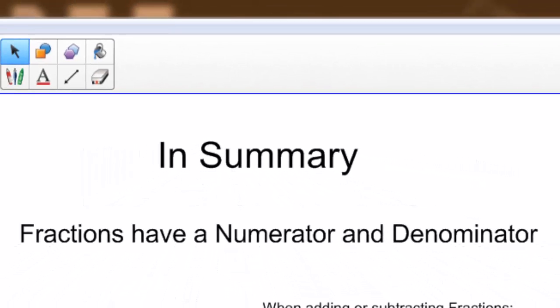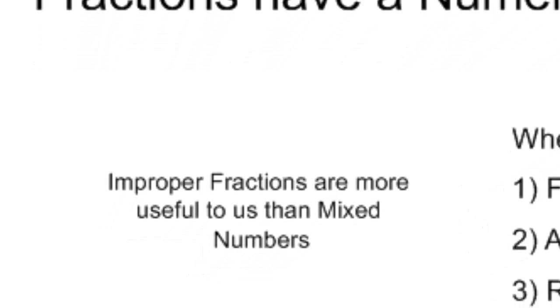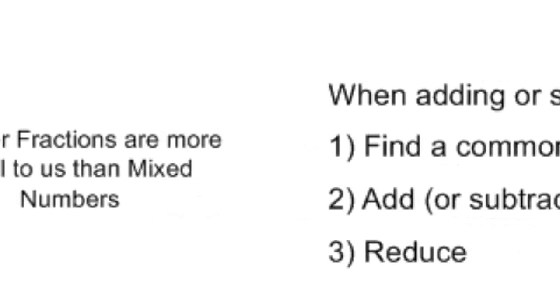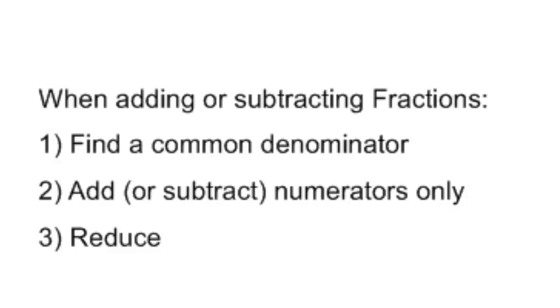So to summarize the video, fractions have both a numerator and denominator. The numerator is the top part, the denominator is the bottom part. As we're working in high school math, we're going to find that improper fractions are more useful to us than mixed numbers. So as much as possible, we want to leave our answers as improper fractions. And then finally, when we're adding or subtracting fractions, we need to first find a common denominator, add or subtract the numerators of the fractions only, and then reduce.